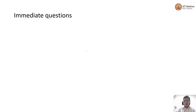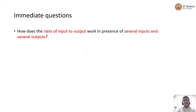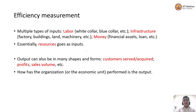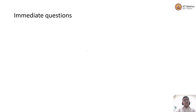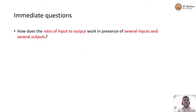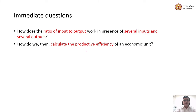What we are trying to understand in this session is a comprehensive measure of efficiency. The questions we are trying to answer are: how does input and output work when we have several inputs and several outputs? And how do you calculate productive efficiency of an economic unit in that scenario?